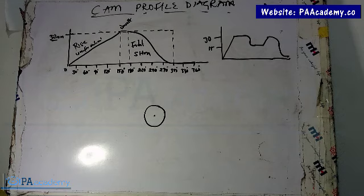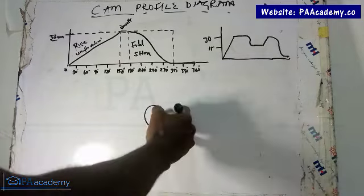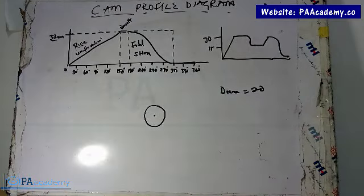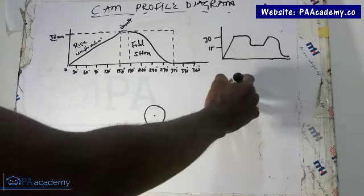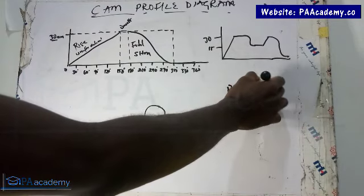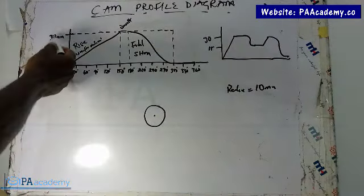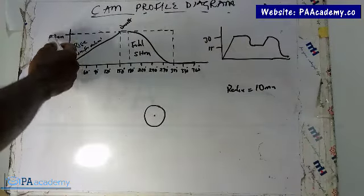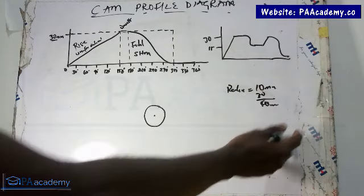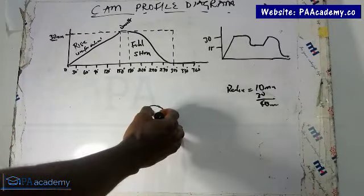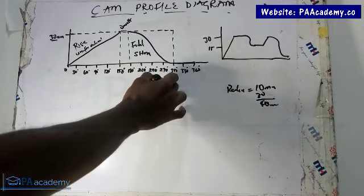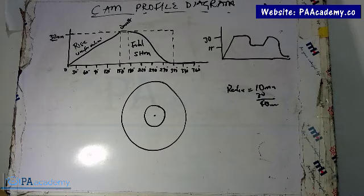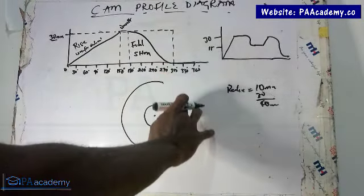The next thing to draw is the second circle. Since the diameter is 20mm, the radius is 10mm. You take that 10mm and add the total height — which is the rise of 30mm — giving us 40mm. So you bring your compass to the same center, measure 40mm, and draw the second, larger circle. So you have a smaller inner circle of radius 10mm and a larger outer circle of radius 40mm.